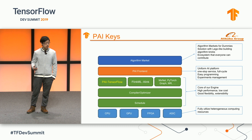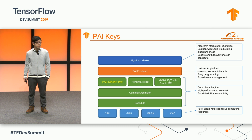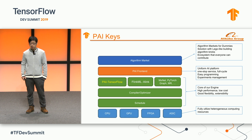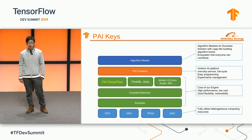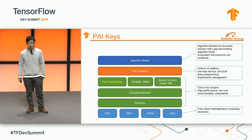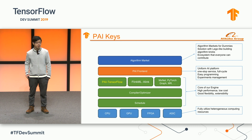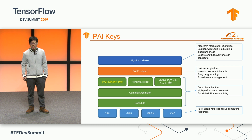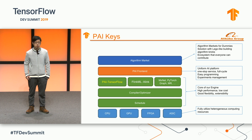Here are our key system design principles. We want to have easy-to-use building blocks for AI application creators. We also provide coverage of the full developer cycle, giving developers a one-stop programming experience. Our core engine provides high performance, low cost, and good flexibility and extensibility.